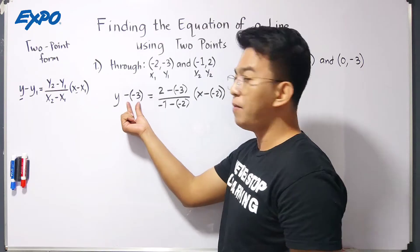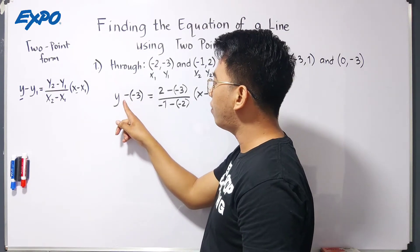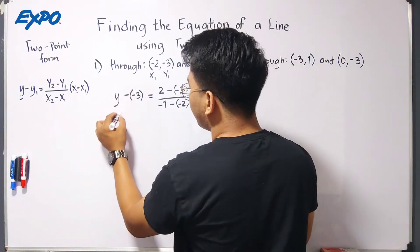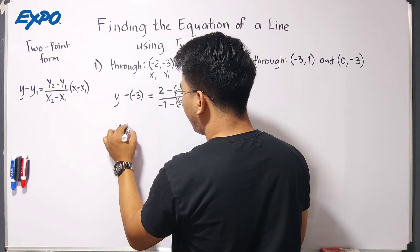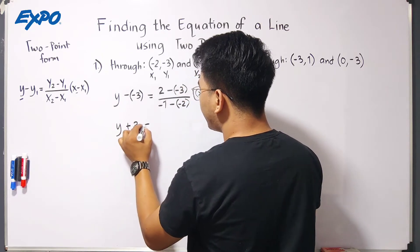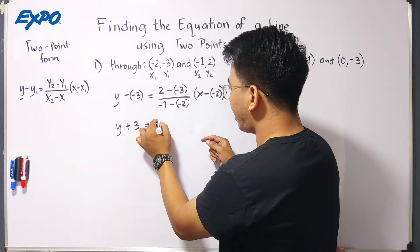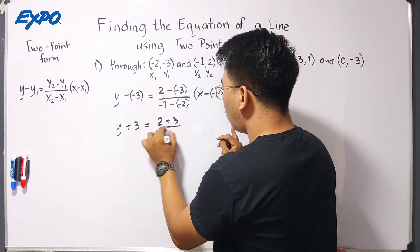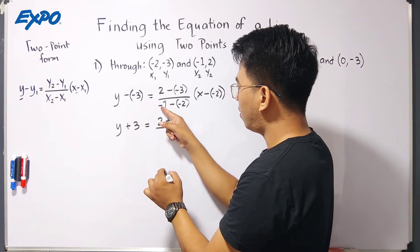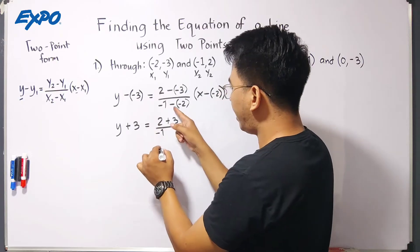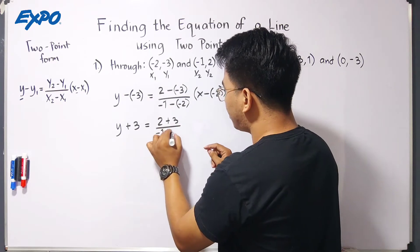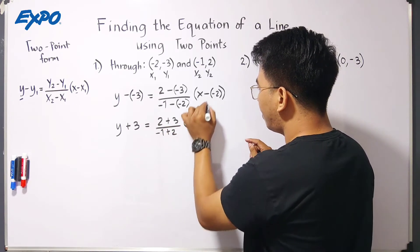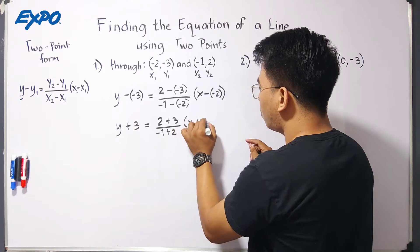Now let's simplify this. Whenever you're encountering a minus and then a negative integer, you can multiply it. It will become positive. So, you have now y plus 3 equals, here 2, we'll copy that, 2. The negative times negative is positive. So, it will become plus 3 over negative 1. Negative times negative is positive. So, this is plus 2. And for this one, we have x negative times negative is positive. So, x plus 2.